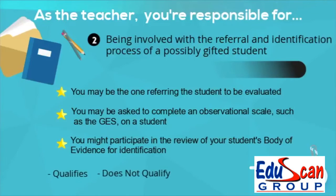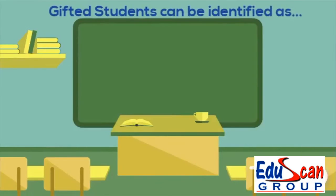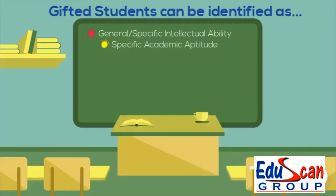You might participate in the review of your student's body of evidence for identification. Whether your student qualifies or does not qualify, or whether the school decides to put the student's body of evidence in the talent pool, it is important for the child to get recognition if they are different from other students. Gifted students can be identified as general or specific intellectual ability, specific academic aptitude, or specifically talented aptitude.